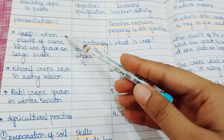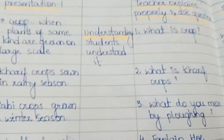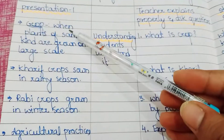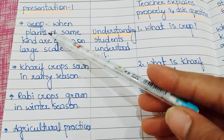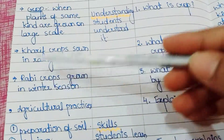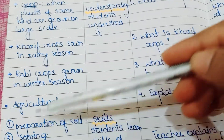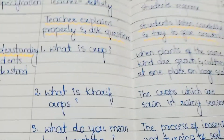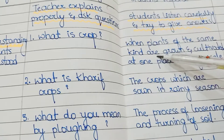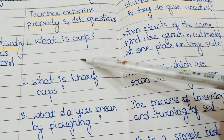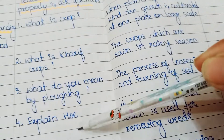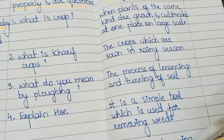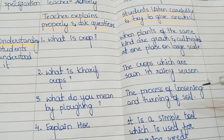Now here in Presentation 1, let me zoom in for you — you can see the definition of crop, and all about Kharif crops, Rabi crops, and agriculture crops. We have to explain everything properly to students. The questions asked include: 'What is a crop?', 'What is a Kharif crop?', and 'What do you mean by ploughing?' — with expected answers from students.